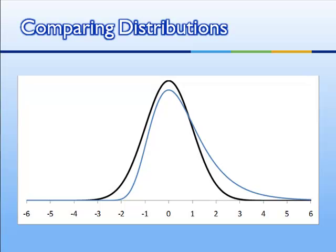Consider these two variables. In blue, we have a distribution that we would say is positively skewed. It leans to the right in the positive direction. How skewed is it? We compare it to the normal curve, which is not skewed at all. So almost every distribution we can compare to the normal curve and ask, to what degree is it different?